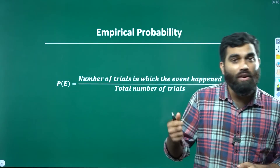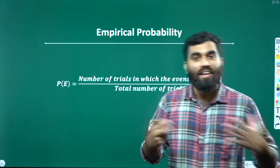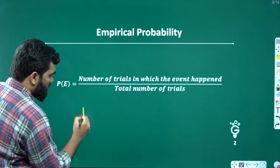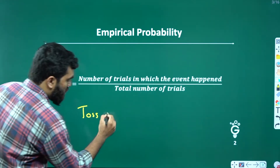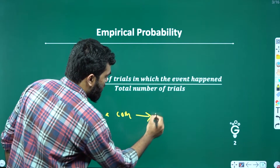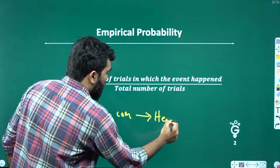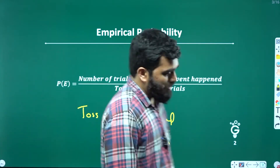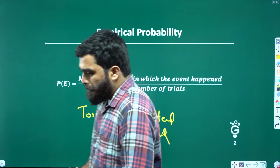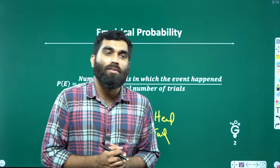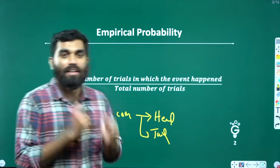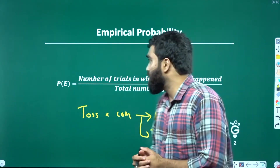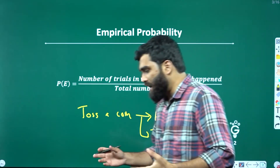One: tossing a coin. When we toss a coin, there are two possibilities. We have two probabilities — either it can be a head or it can be a tail. Now, what is the probability of head? And what is the probability of tail? Let's look at two possibilities.